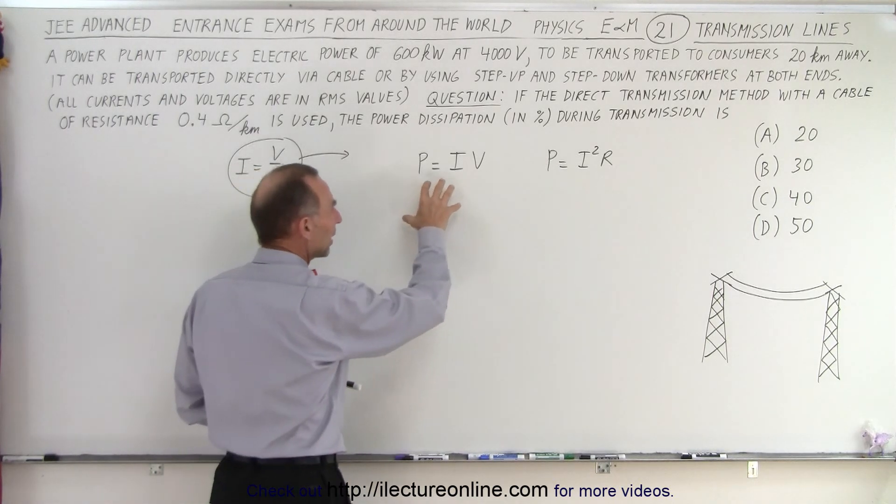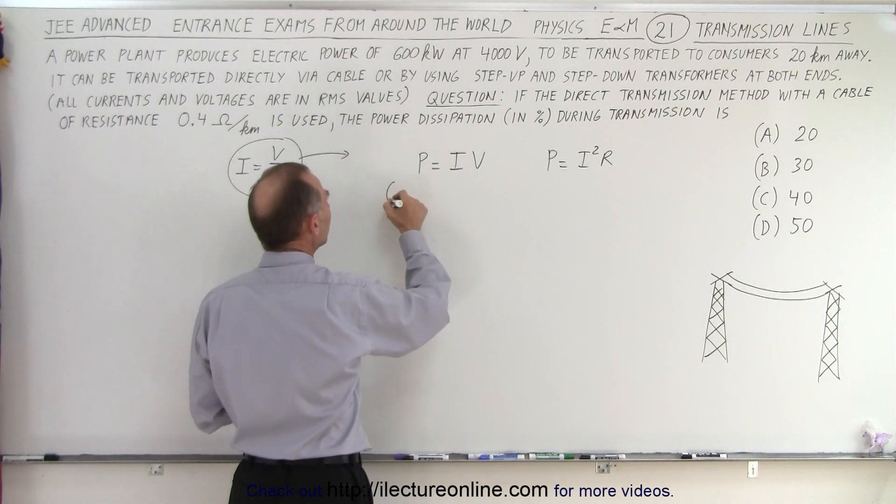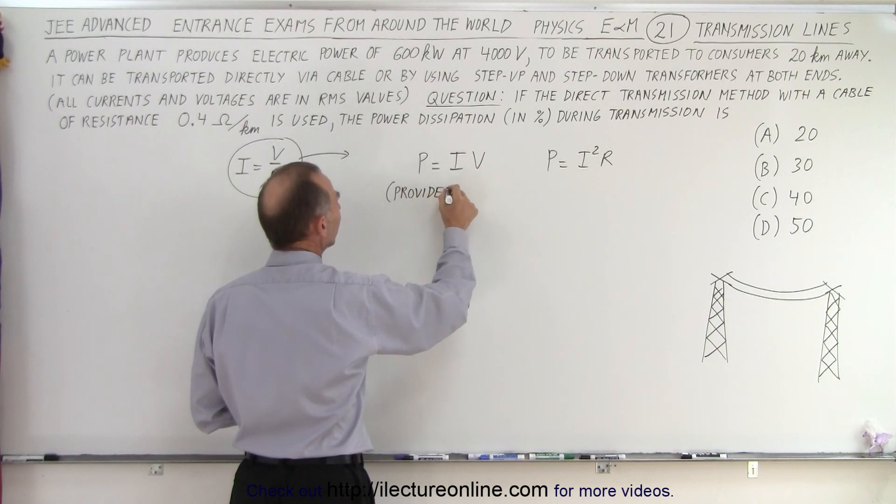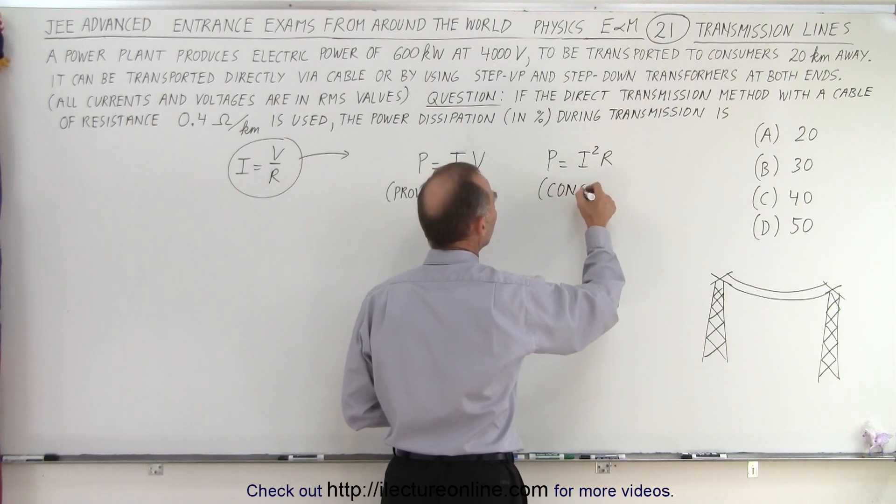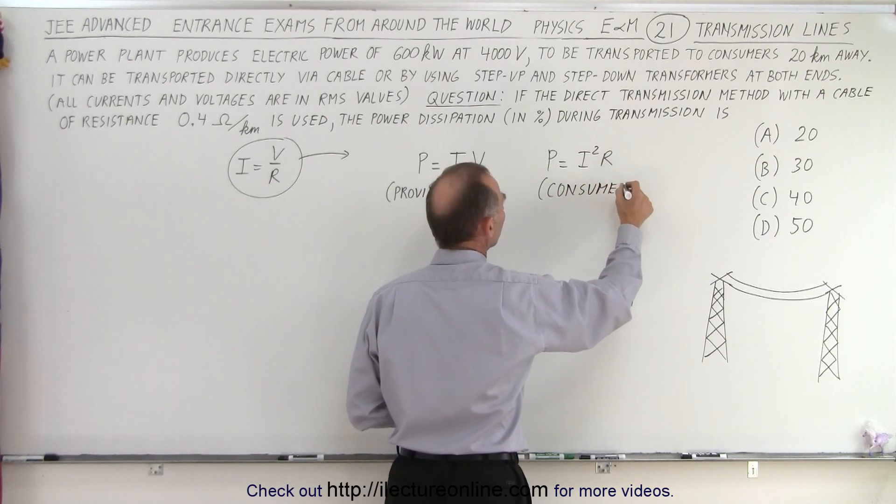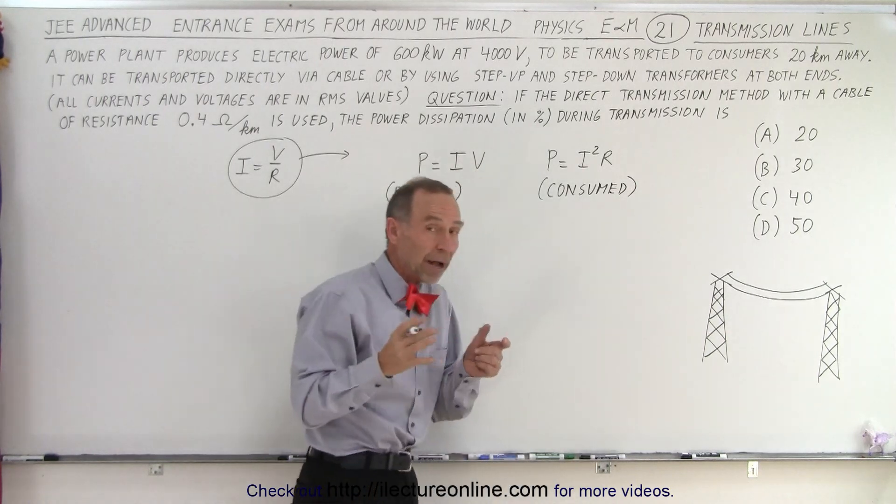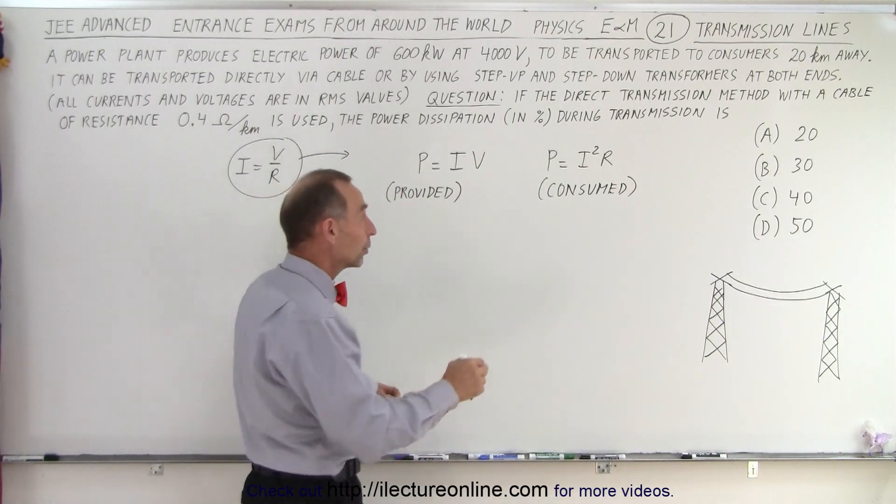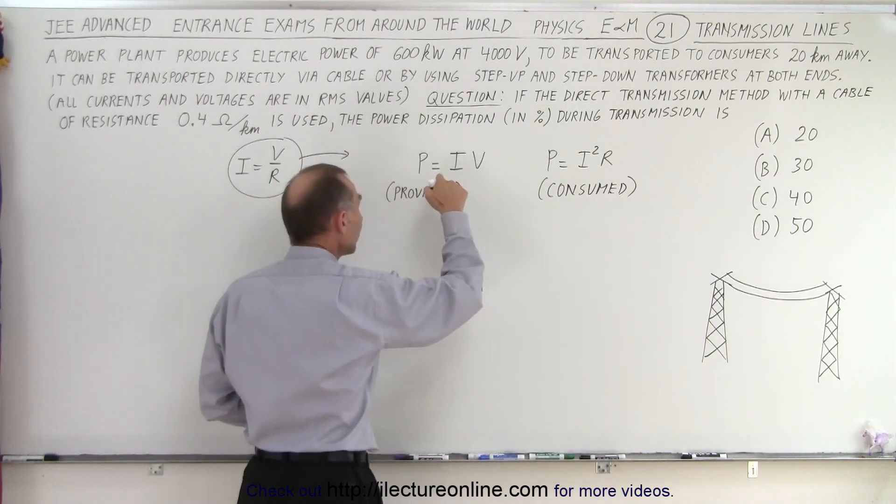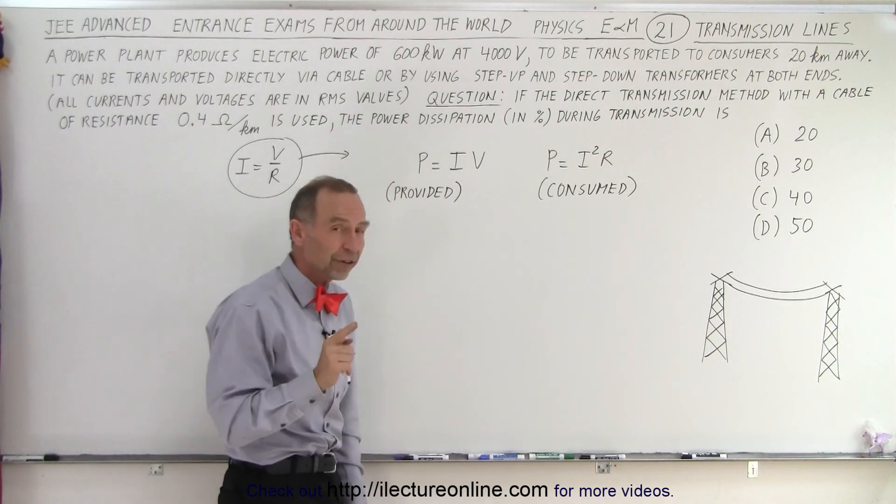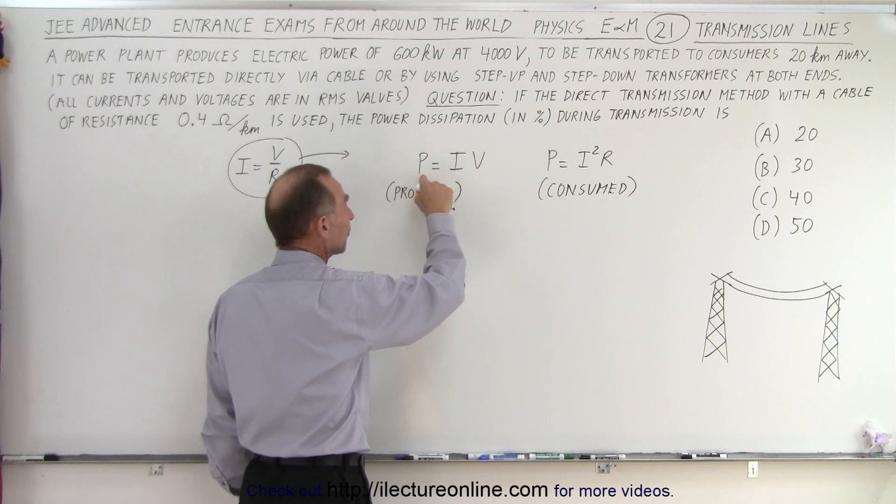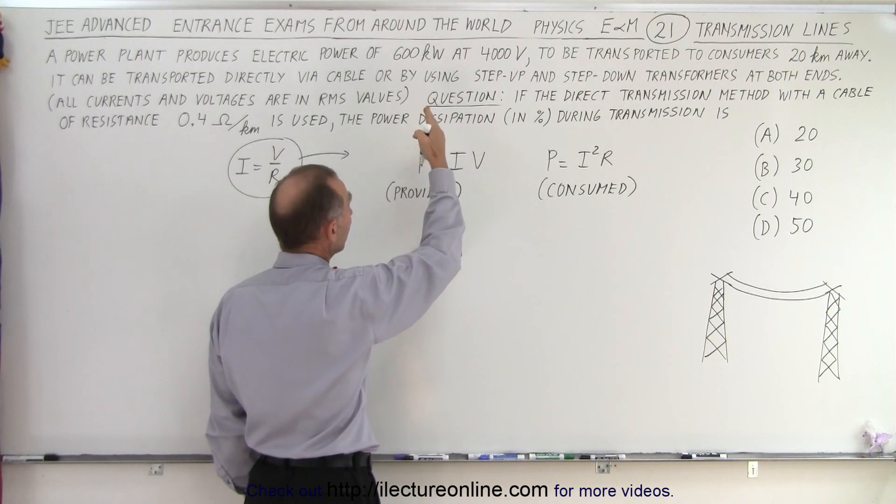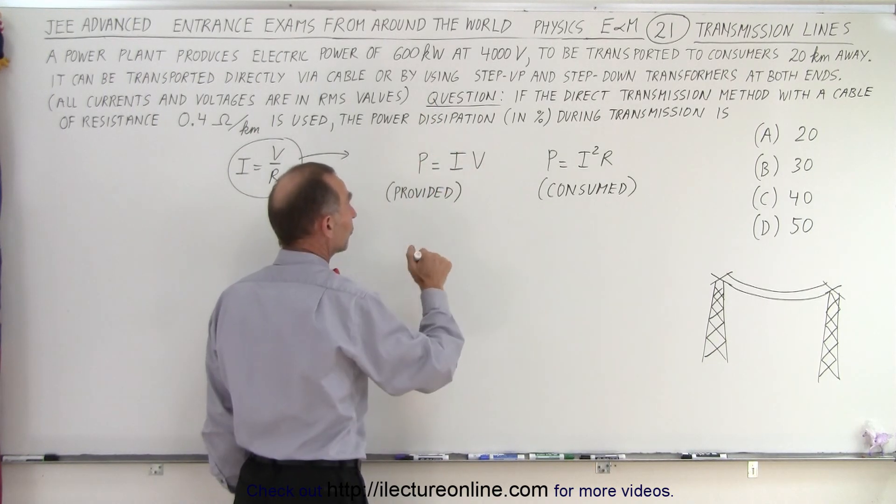Because this is the equation you use when you say power provided. So power provided, you tend to use this equation. Power consumed, you tend to use this equation. So when we want to calculate how much power we're actually consuming, we're going to use this equation. But this equation is going to be used first to figure out how much current we have in the wire because we're providing power 600 kilowatts at 4000 volts.